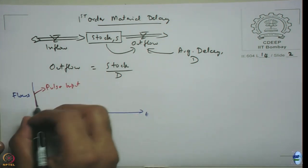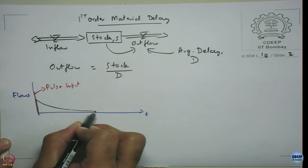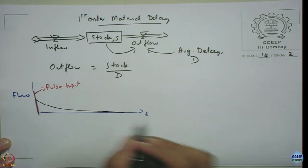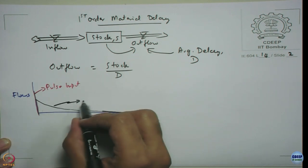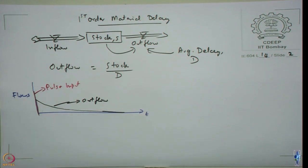The outflow will immediately start and you will have an exponential goal seeking system. This is your outflow profile for this particular system.